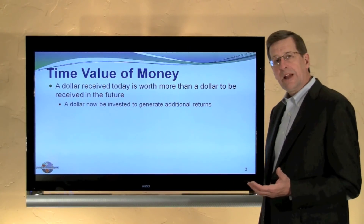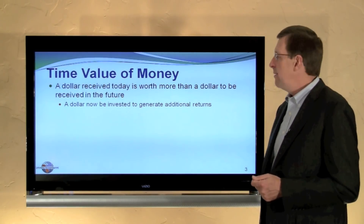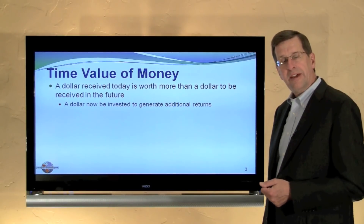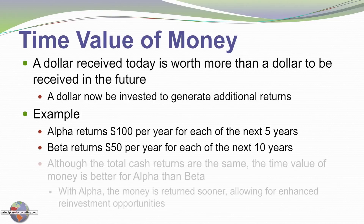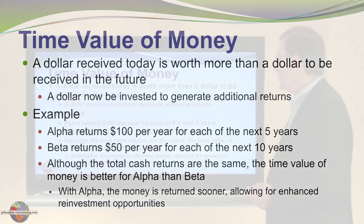It starts with a basic awareness that a dollar to be received today is worth more than a dollar to be received in the future, because that dollar can be reinvested and earn returns. Very simply, if investment alpha returns $100 a year for 5 years and beta returns $50 a year for 10 years, alpha is preferable because you get the money back sooner and you're able to reinvest it and earn additional returns elsewhere.